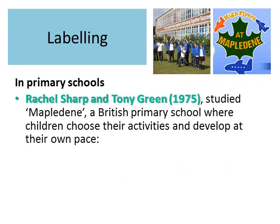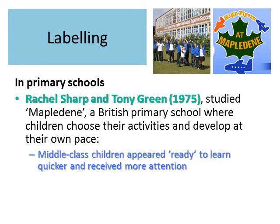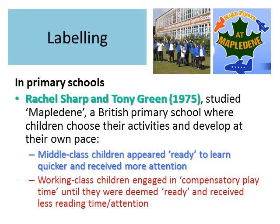Coming back to the UK, Sharp and Green studied Maple Dean, a British primary school where children choose their activities and develop at their own pace — quite a radical, unusual school that gives power to the children to decide what they learn and when. Middle class children appeared ready to learn more quickly and therefore received more attention from teachers; they would go up to teachers and say, 'I want to do some art, I want to do some maths, I want to do some reading.' Whereas working class children engaged in compensatory play time until they were deemed ready, and received less reading time and attention.